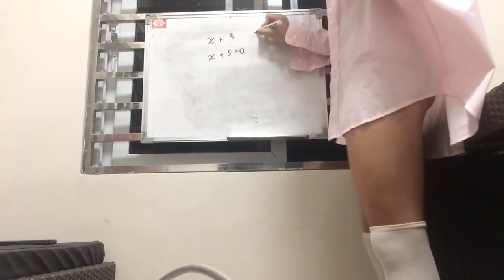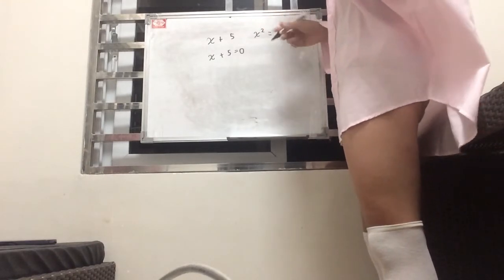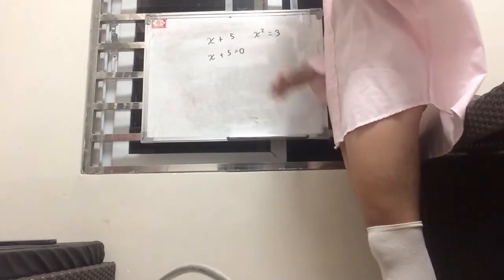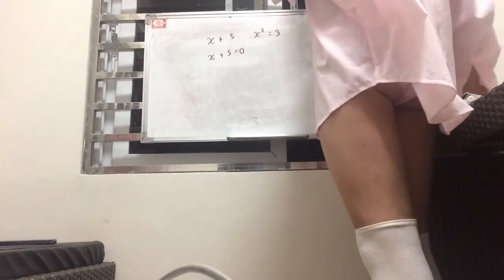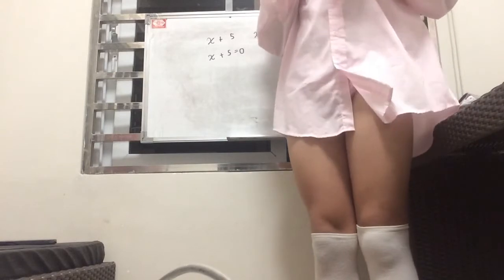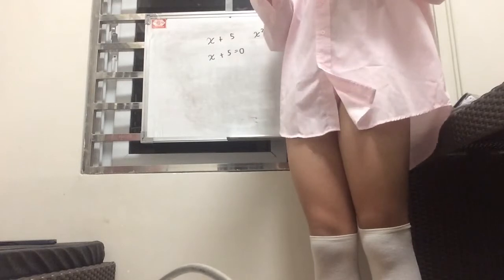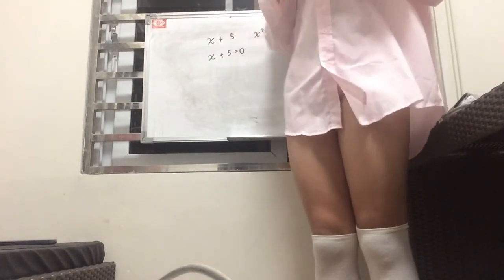So something such as x plus five equals zero is an equation from the name equate. So this is an equation or something like x squared equals three. This is an equation also.